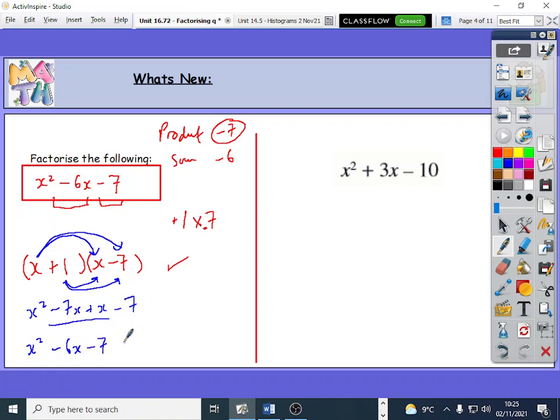So I do get, if I expand it, I do get this. So I know for a fact that I've done it right. Okay, this is the factorised form of that. So if I'm factorising that, that would have been x plus 1 multiplied by x minus 7.